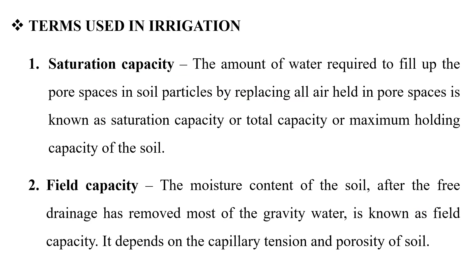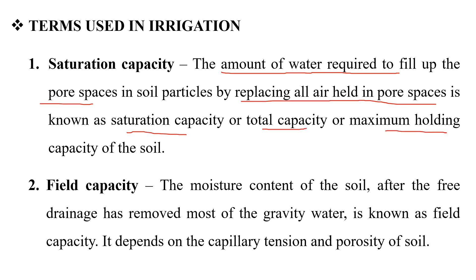Next, we are going to start the terms used in irrigation. The first one is saturation capacity. Saturation capacity is the amount of water required to fill up the pore spaces in soil particles by replacing all air held in the pore spaces. This is known as saturation capacity, or total capacity, or maximum holding capacity of the soil.